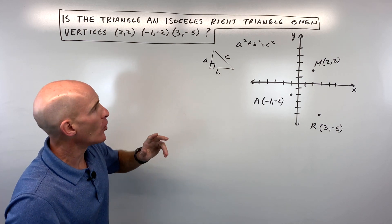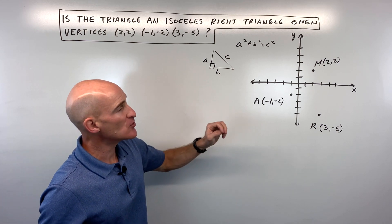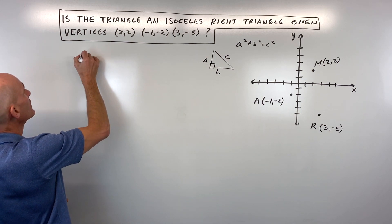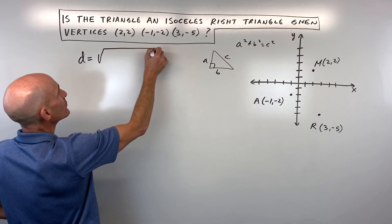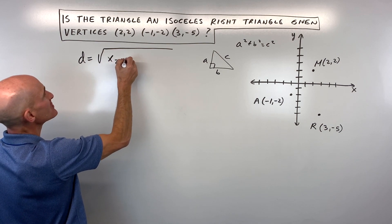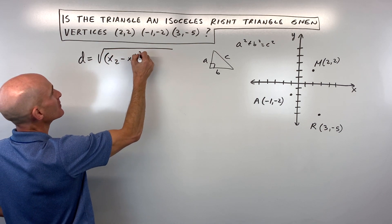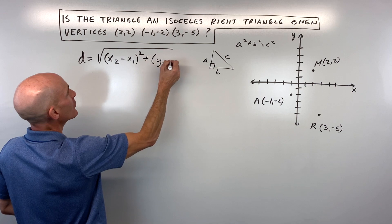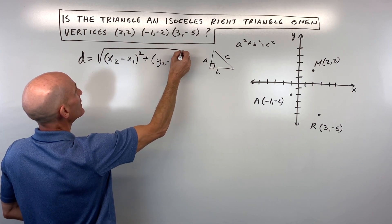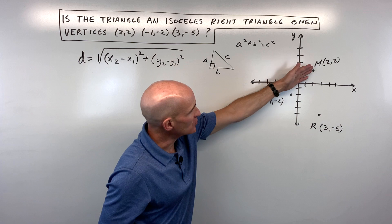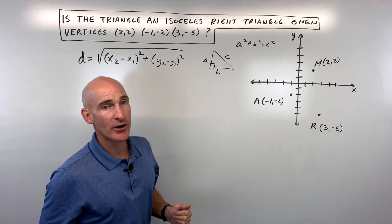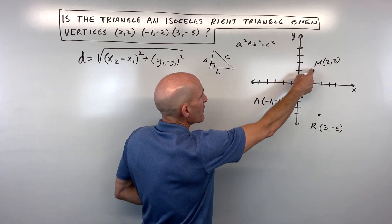In order to do this, we're going to have to use the distance formula. You might remember from a previous class the distance formula is: the square root of the difference in the x-coordinates squared plus the difference in the y-coordinates squared. That's going to give you the distance between two points on our graph.